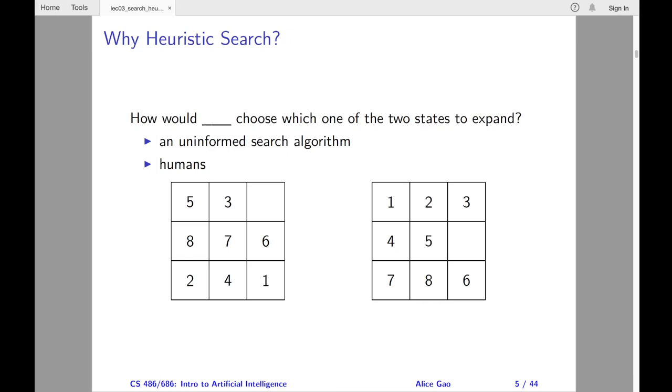The state on the right is one move from the goal state. For the state on the left, it's unclear how many moves it requires to transform the state to the goal state. Definitely more than one move.